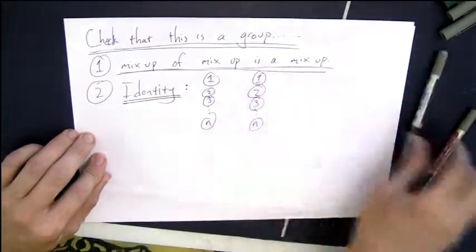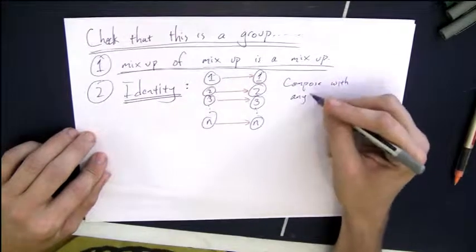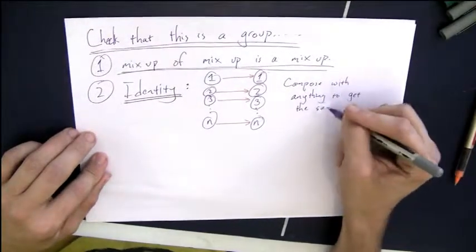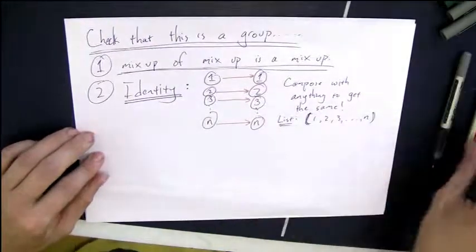The identity element in the braid notation is really easy to draw. You just have all of the straight lines straight across. And if you compose that with anything, you'll get the same thing back. So therefore, that's an identity element. So we have an identity.